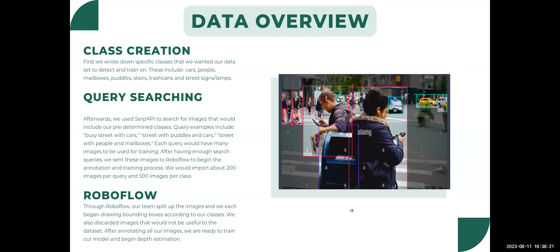The first step we had to take was class creation. We brainstormed the different classes that we wanted our AI to detect, and the list was cars, people, mailboxes, puddles, stairs, trash cans, and street signs slash lamps.